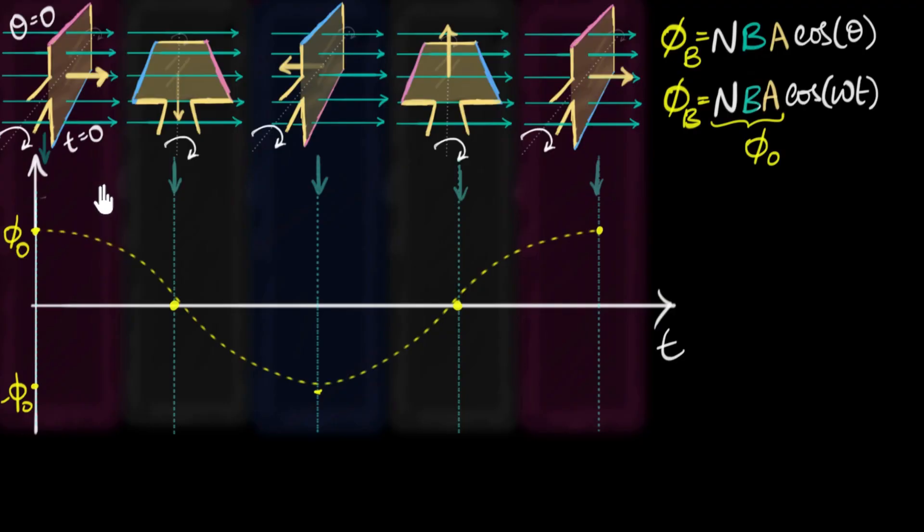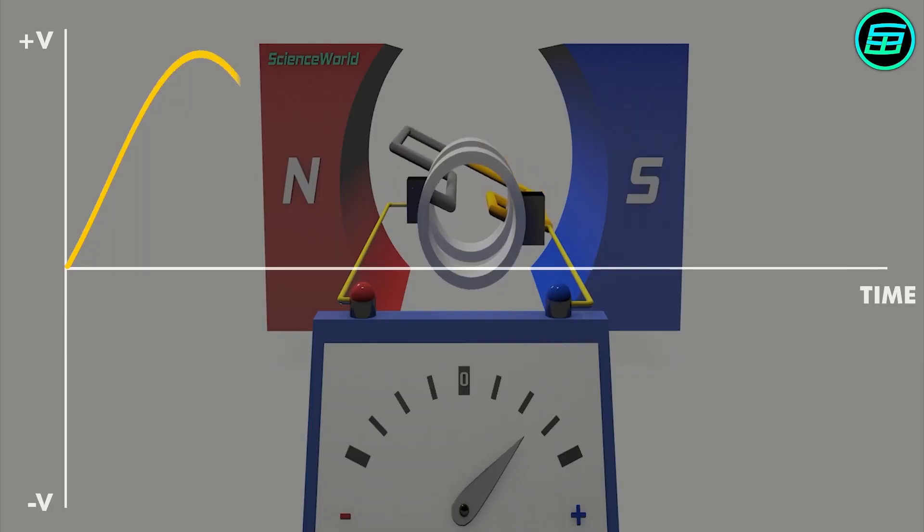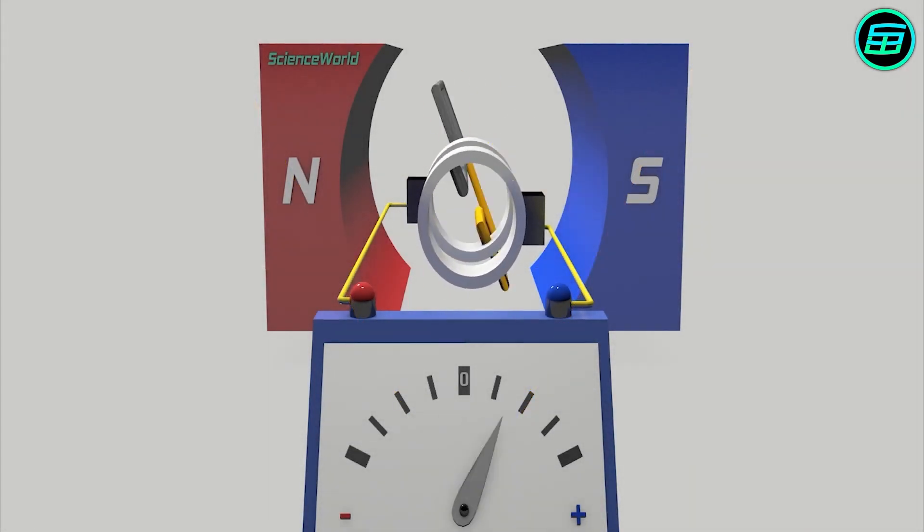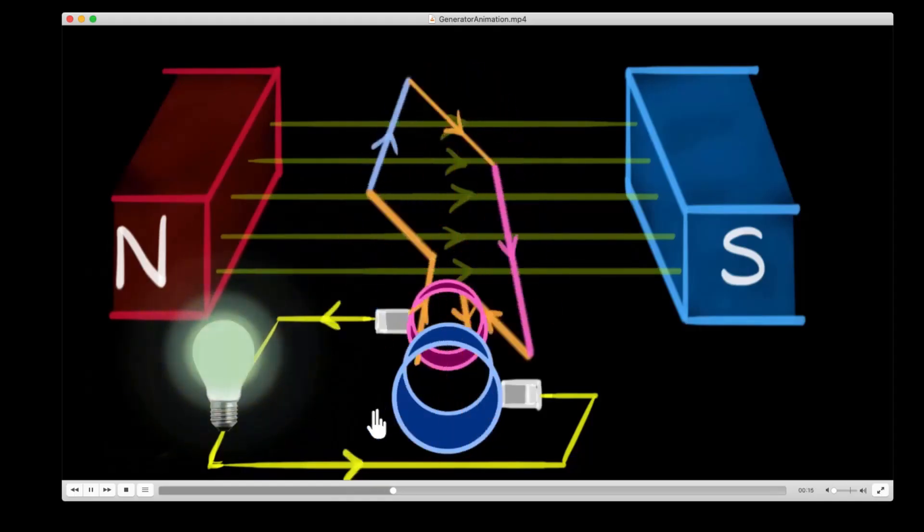But how does this happen? It all boils down to the relationship between electricity and magnetism. When a conductor like a wire moves through a magnetic field, it disrupts the field, and causes the electrons in the wire to move. This movement of electrons is what we know as electric current.